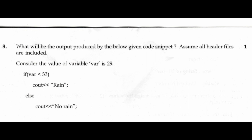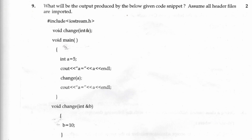Question 8: What will be the output produced by the below given code? Assume all header files are included. Consider the value of variable var is 29; if(var < 33). void change(int n); void main() { int a = 5; cout << a << endl; change(a); cout << a << endl; } void change(int n) { n = 10; } Output: 5, 5.